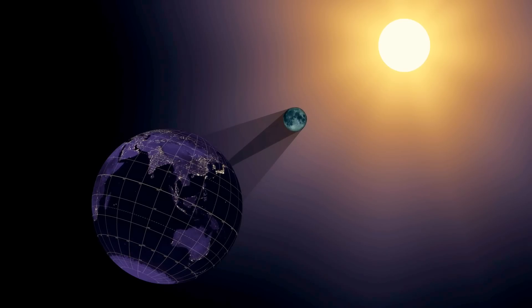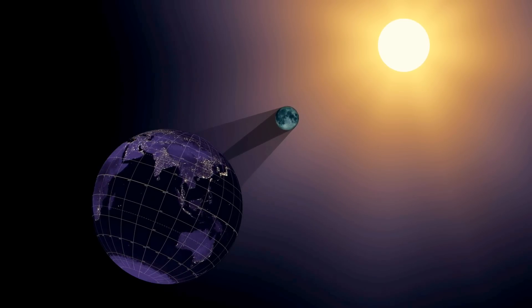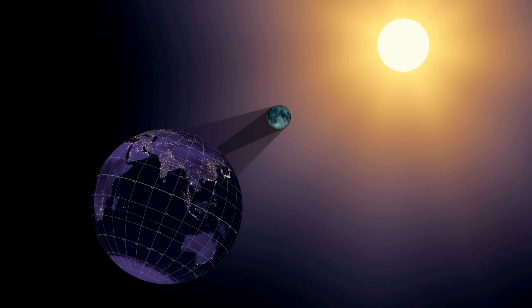On August 21, 2017, the Earth will cross the shadow of the Moon, creating a total solar eclipse.